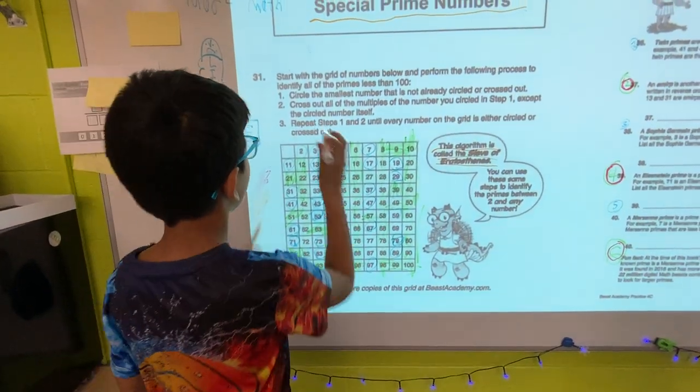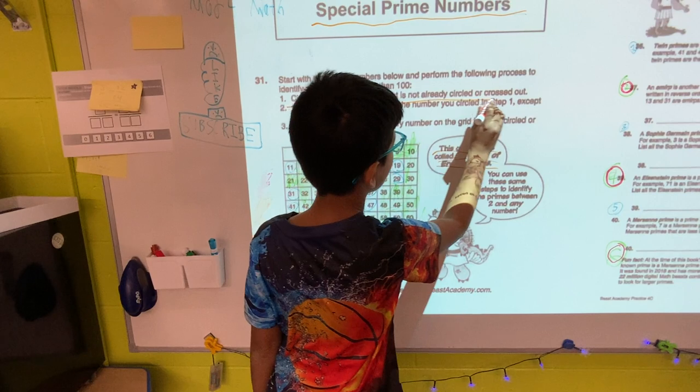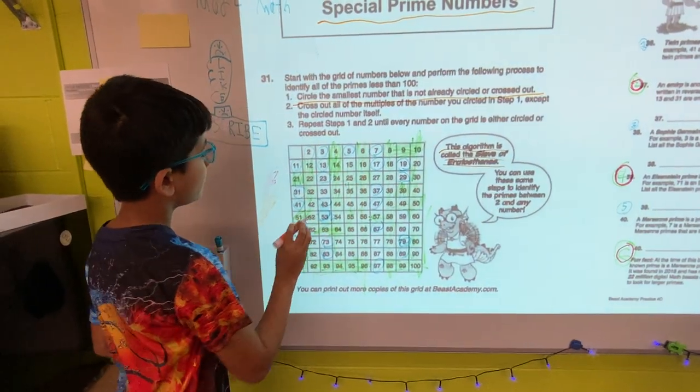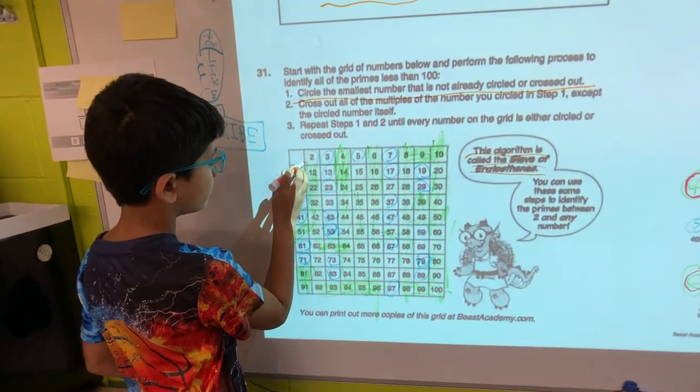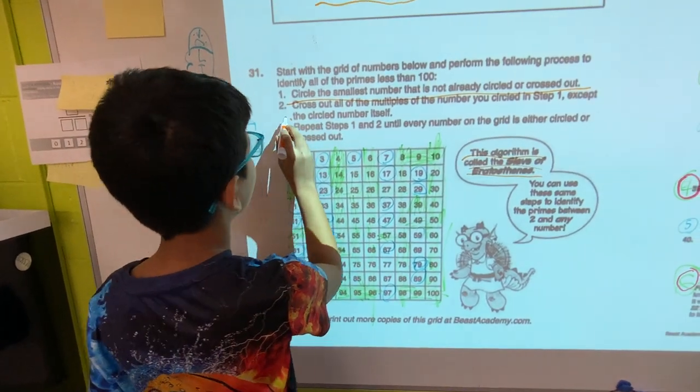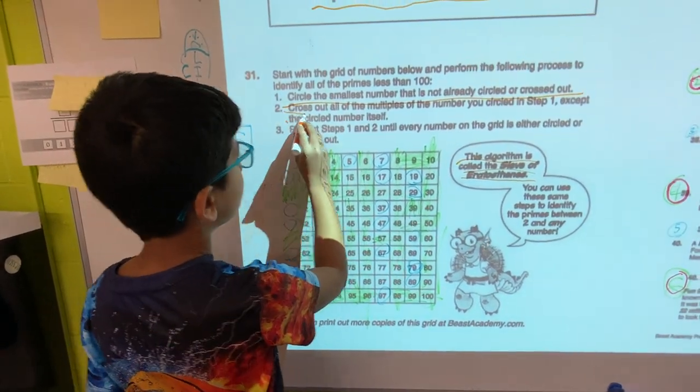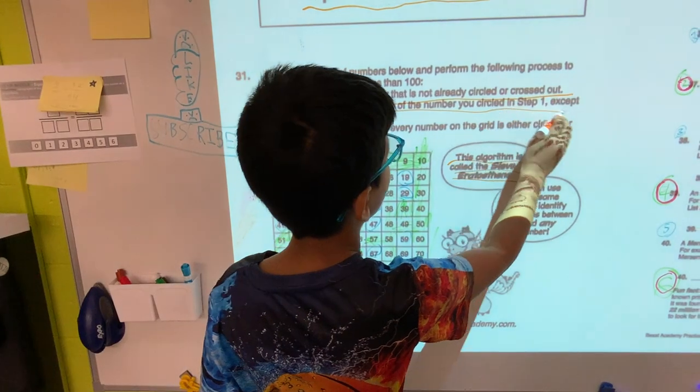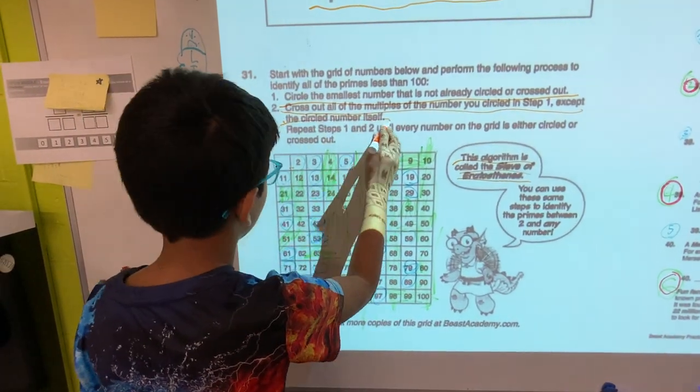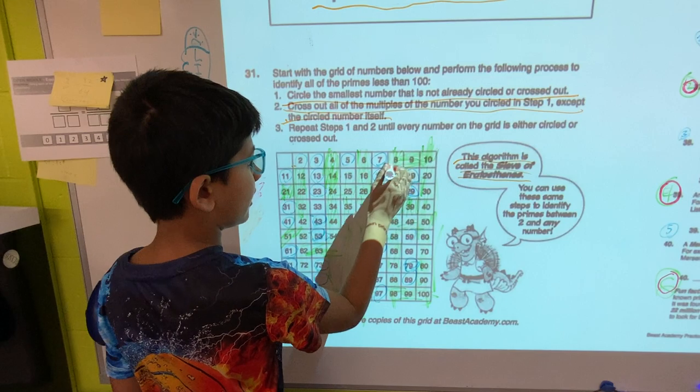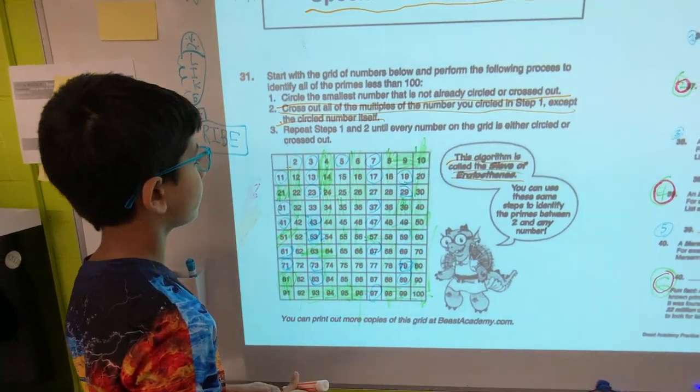Circle the smallest number that is not already circled or crossed out. We already filled this in, so it would be two. Then, cross out all the multiples that you circled except the circle number. So we crossed out four, six, eight, ten, and all the other multiples of two.